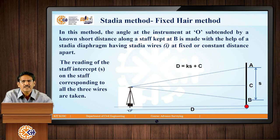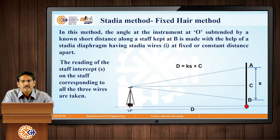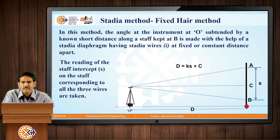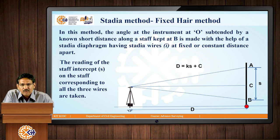In the fixed hair method, the angle at the instrument position O is subtended by a known short distance along a staff kept at position B. With the help of the stadia diaphragm, we can measure the staff distance and record it. The difference between the top hair and the middle hair is called the stadia interval, given by the denomination I. The intercept made on the staff is denoted by small s. The distance formula is given by Ks plus c, where k is the multiplying constant, c is the additive constant, and s is the staff intercept.